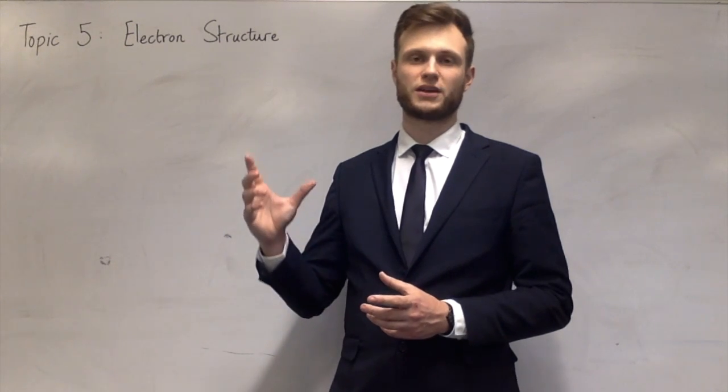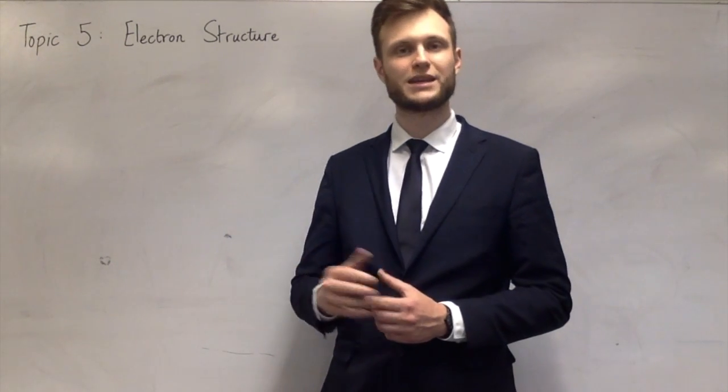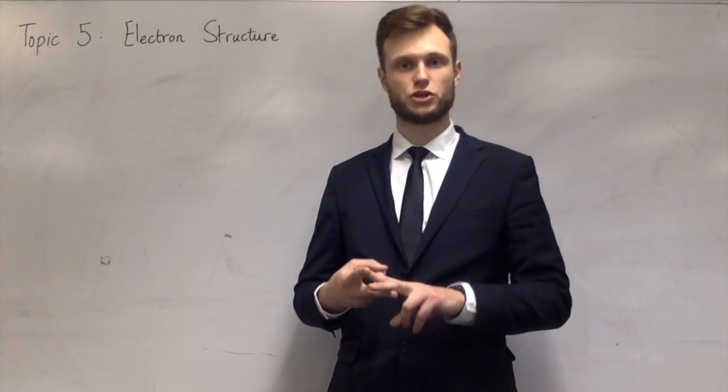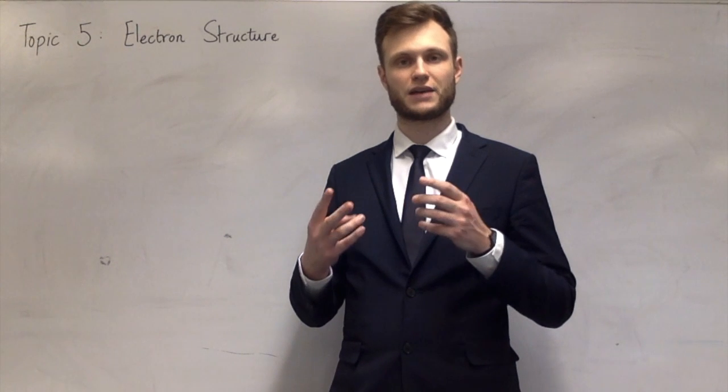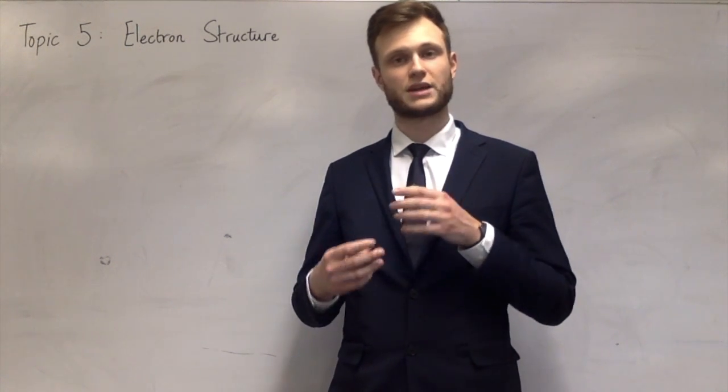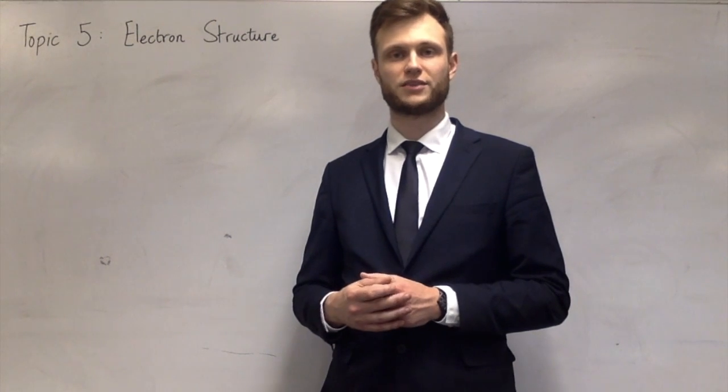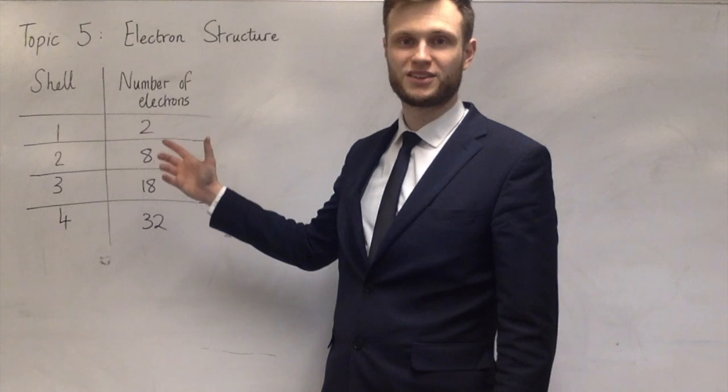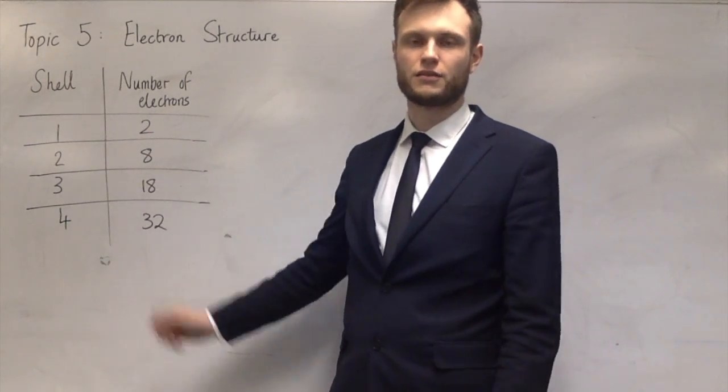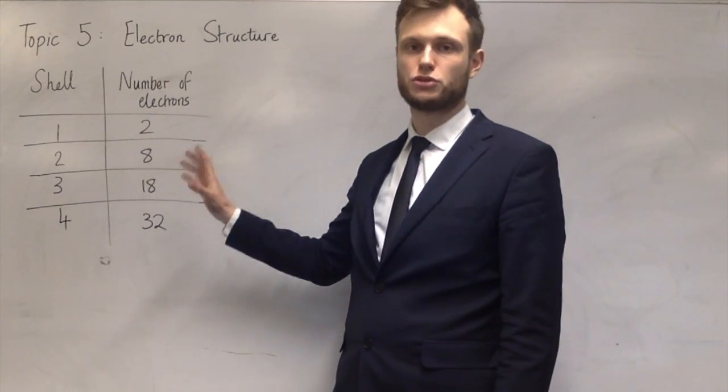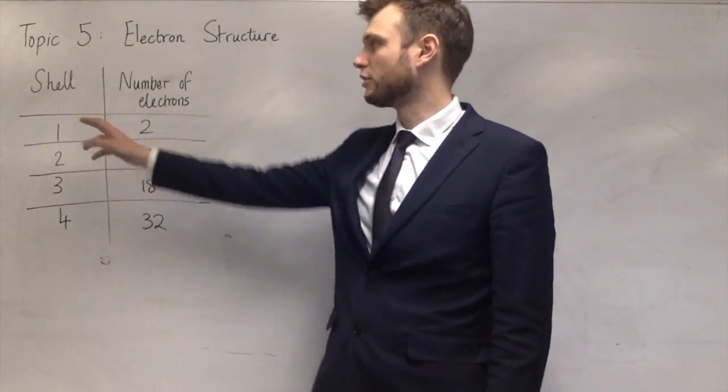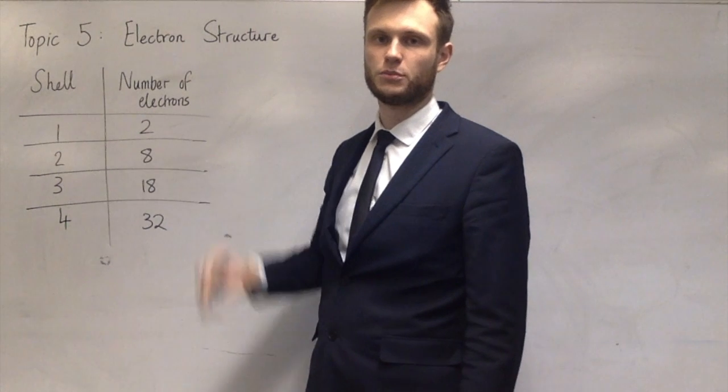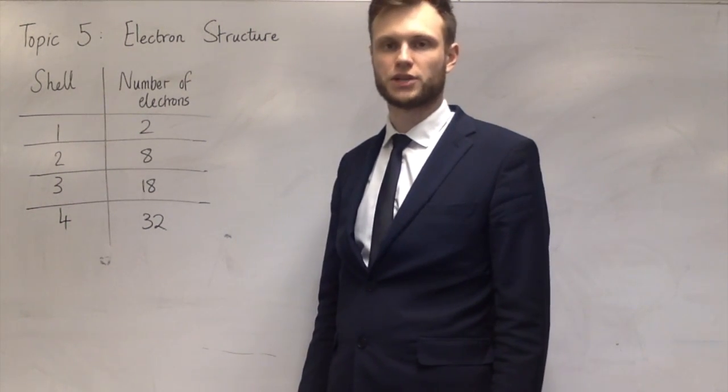The first part of this topic in the specification says you need to know how many electrons are in each shell of the first four shells. So the first shell can have two, the second shell can have eight, the third shell can have 18 electrons, the fourth shell has 32 electrons. And if you're good at maths, you'll see the pattern there, increasing by 6 and 10 and 14. That is a 2n squared relationship. So the shell number squared multiplied by 2 gives you the number of electrons in that shell.